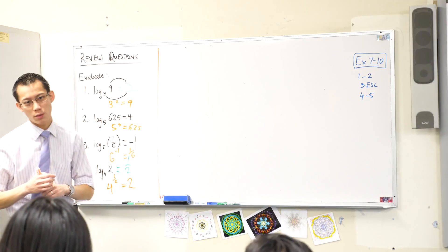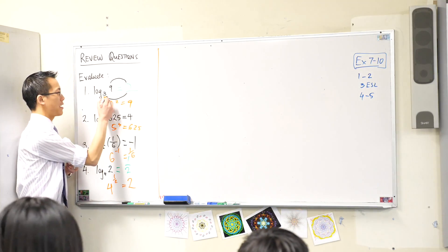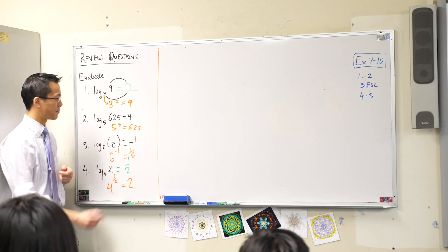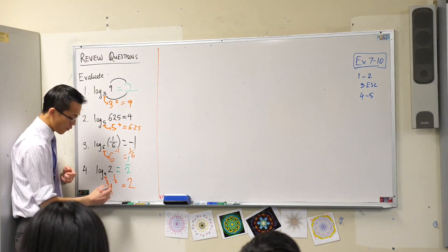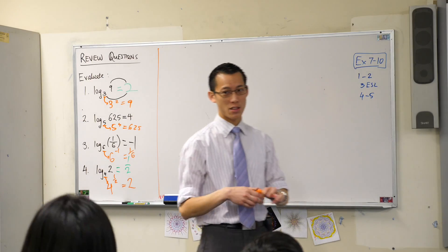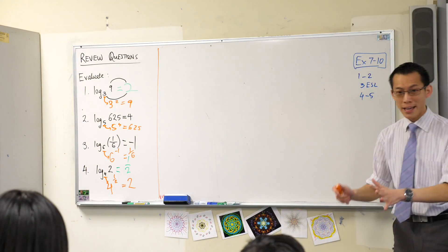The bases are the things which are the same. So this base of 3 becomes this base of 3. This base of 5, this base of 6, this base of 4. Okay, and then the other guys are the ones that shuffle around. Okay, well done.